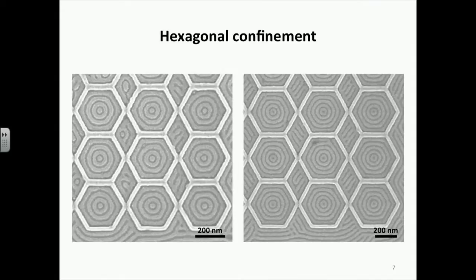Next, we tried hexagonal confinement. Similar to circular confinement, we observed well-ordered concentric hexagonal ring shapes. One thing to note is that the outermost ring is hexagonal because it is directly affected by the hexagonal template. However, the inner rings become more circular in shape, because hard bending angles are difficult to achieve and energetically unfavorable compared to smooth bending angles.